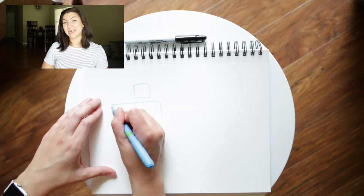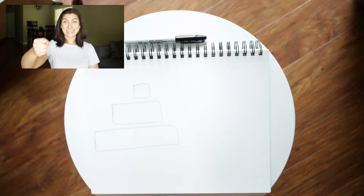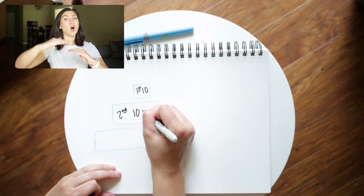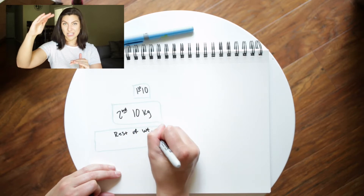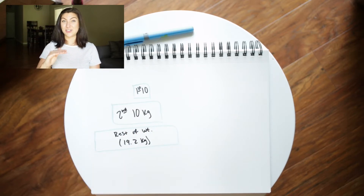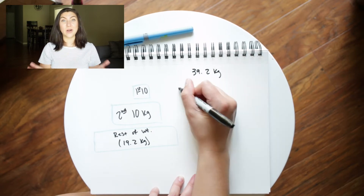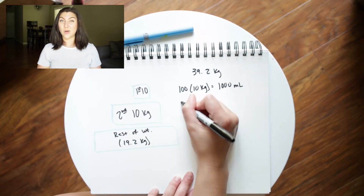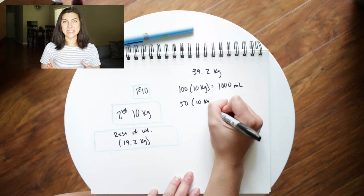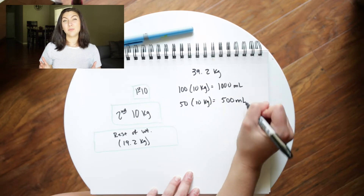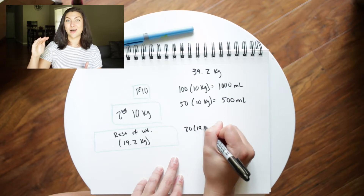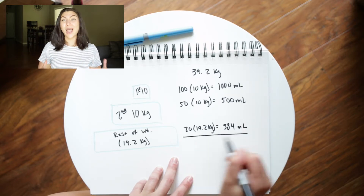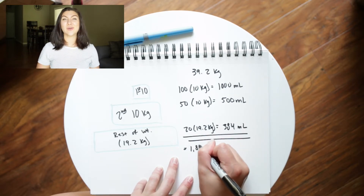Let's pretend our patient is 39.2 kilograms. We pour that volume into the top of our fountain and it fills up all of the first tier — the first 10 kilograms — then fills up all of the second tier — the second 10 kilograms — so we have 20 kilograms accounted for. With the remainder of the weight, we use 20 mils times the patient's weight. The remainder would be 39.2 minus 20, because we've already accounted for those first two sets of 10-kilogram measurements.